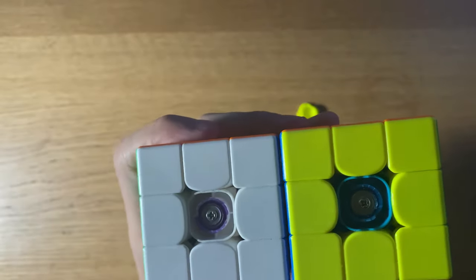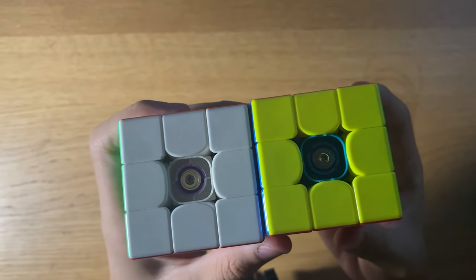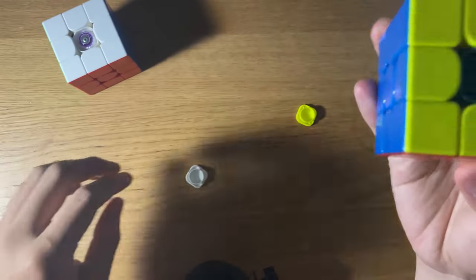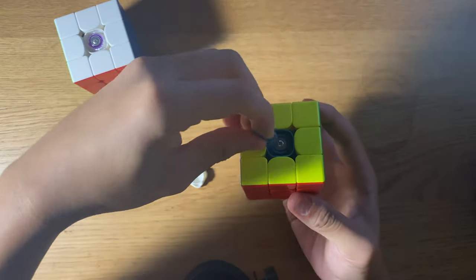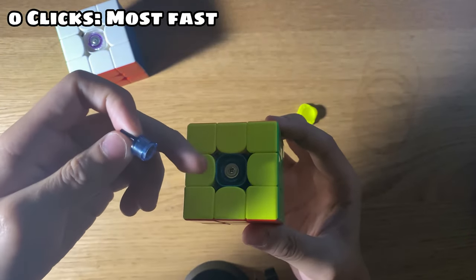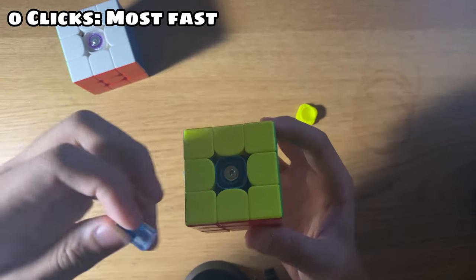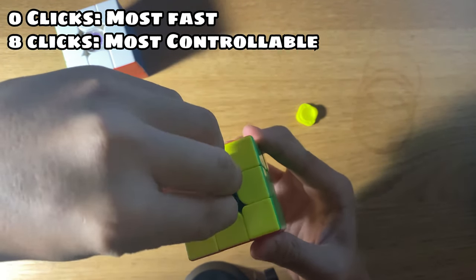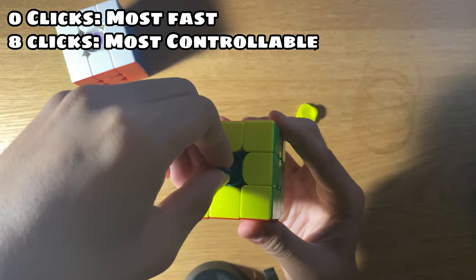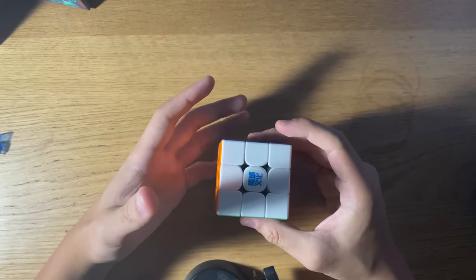It still keeps the Moyu tensioning system, which is always the same. So how you do it is you take the tool from the box. The one with the fewest turns is the lowest setting, which means it's more loose. And if you turn it anticlockwise, it makes it tighter. So moving on to the box.